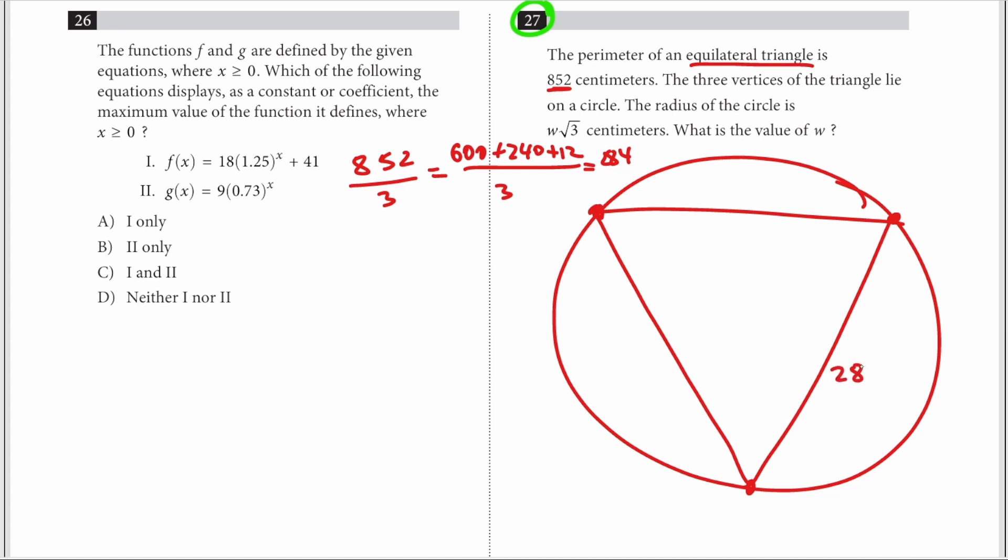Each side of this triangle is 284. It's an equilateral triangle. Now, the next thing is to draw the radius of a circle, which is w√3. So it's somewhere here in the middle. This is w√3, this is also w√3, this is also w√3.